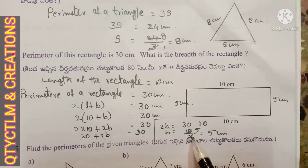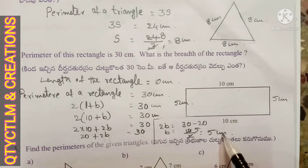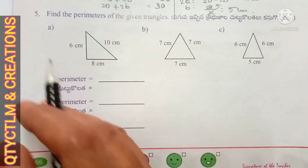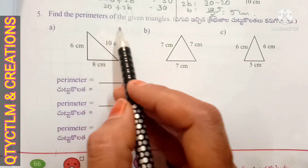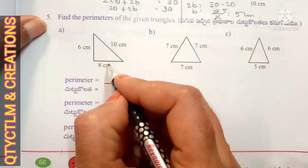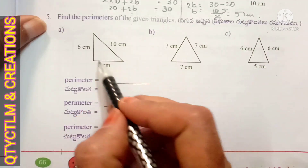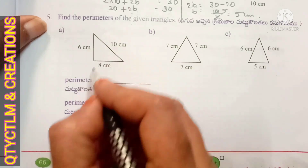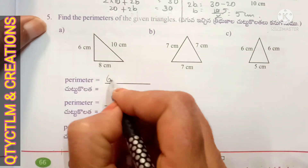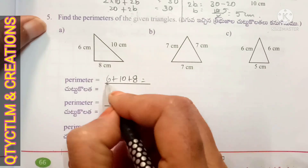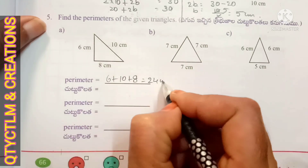Next question: find the perimeters of the given triangles. First triangle — perimeter is the total length of all sides. Perimeter equals 6 centimeters plus 10 centimeters plus 8 centimeters, that is equal to 24 centimeters.